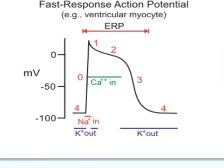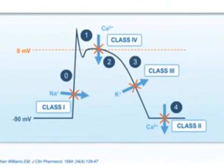We have different classes. Anti-arrhythmic drugs block sodium channels, and we also have potassium channel blockers. We have class 1, class 2, class 3, and class 4. Within class 1, there is class 1A and class 1B. I will tell you about the different classes.